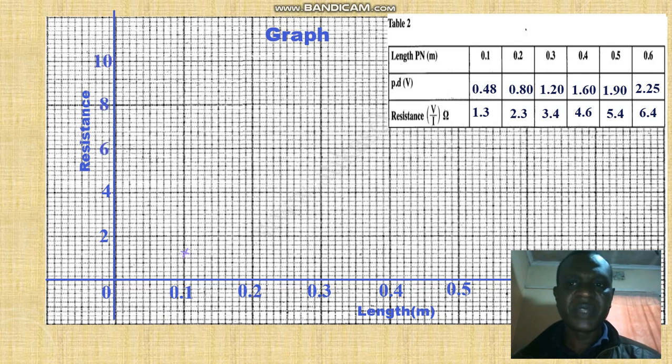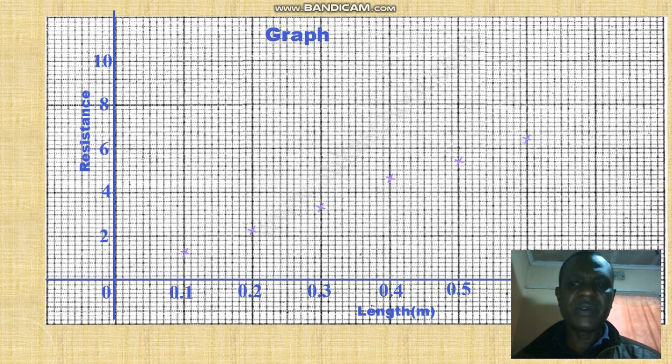We plot 0.1 versus 1.3, 0.2, 0.3. Then we use the line of best fit. We join the lines that are fitting on the straight line.